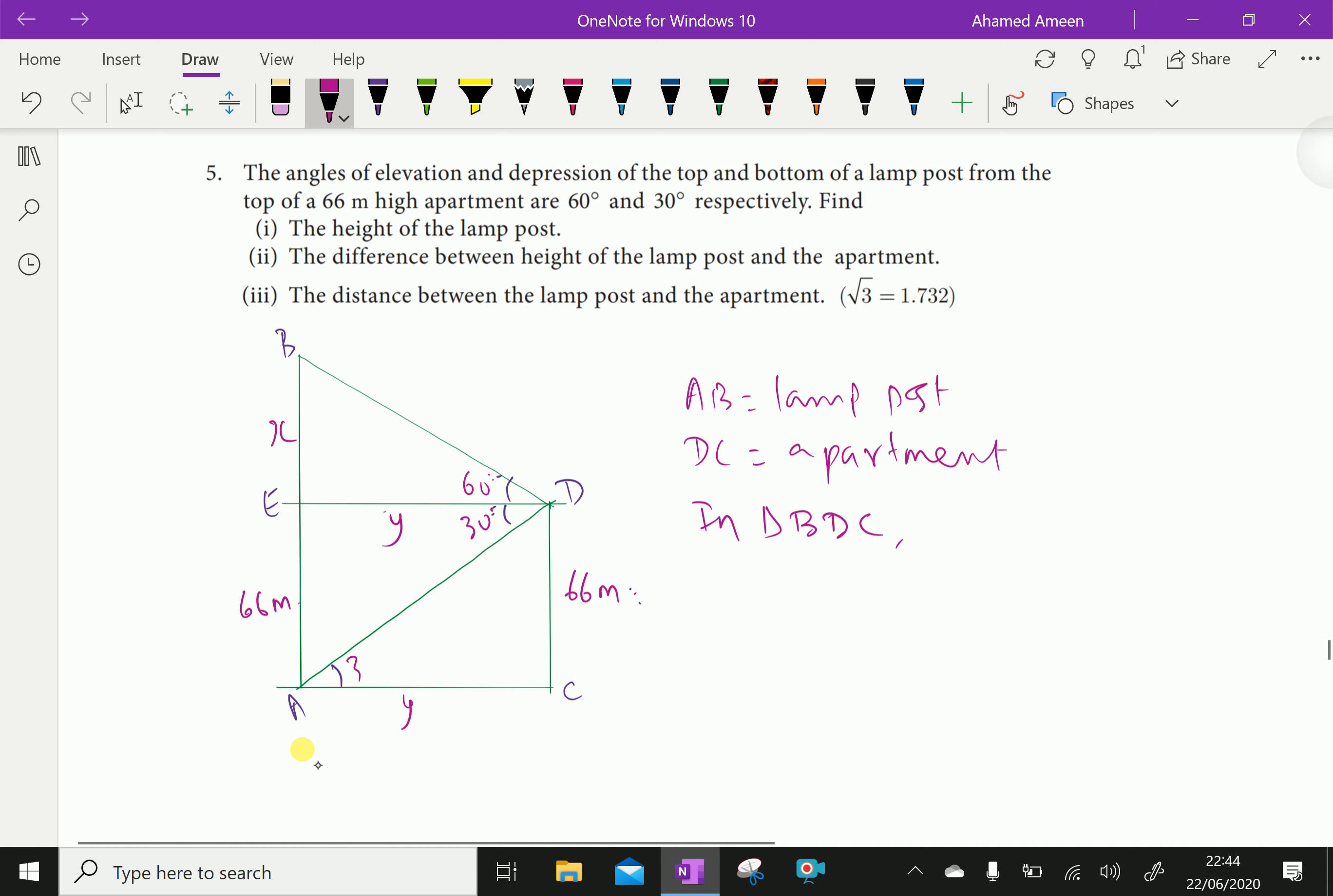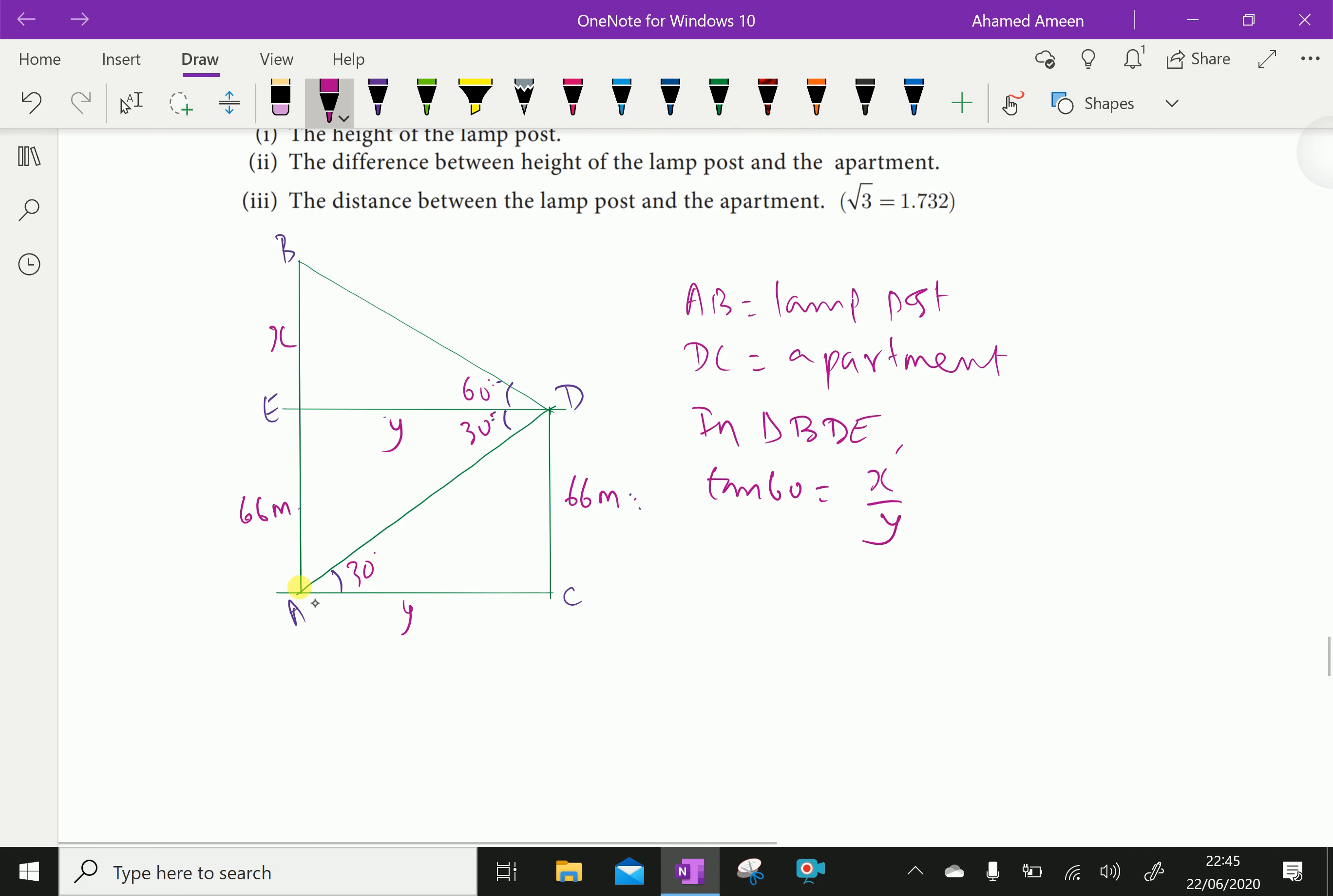Now in triangle BDE, tan 60 equals X over Y. Now tan 60 we know is root 3, so root 3 equals X over Y. From that you can say X equals root 3 times Y.